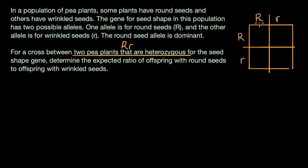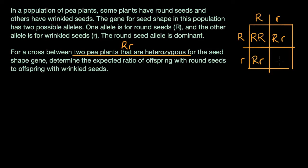The offspring might get the dominant allele, the round seed allele, from both parents: capital R, capital R. All I'm doing is taking whatever letters are in the column and whatever's in the row. It could get capital R from one parent and lowercase r from the other. It could get lowercase r from one parent and capital R from the other. Or in this last scenario, it's getting lowercase r from either one. So these are the four equally likely genotypes.